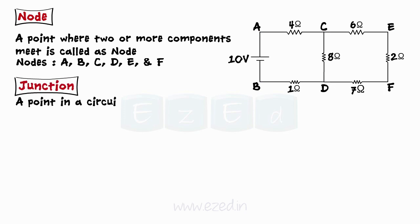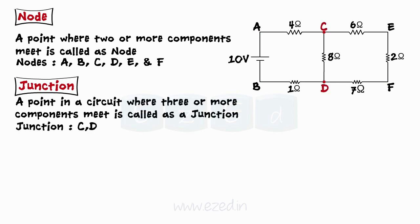A point in a circuit where three or more components meet is called as a junction. In our circuit, points C and D act as junctions. Thus, every junction is a node but every node is not a junction.